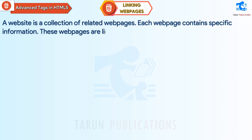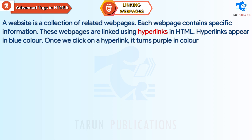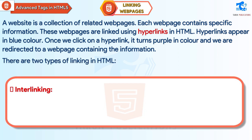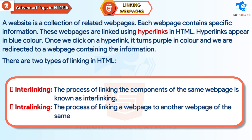Webpages are linked using hyperlinks in HTML. Hyperlinks appear in blue color. Once we click on a hyperlink, it turns purple in color and we are redirected to a web page containing the information. There are two types of linking in HTML. Interlinking: The process of linking the components of the same web page is known as interlinking. External linking: The process of linking a web page to another web page of the same or different website is known as external linking.